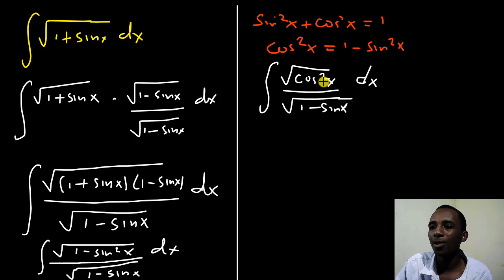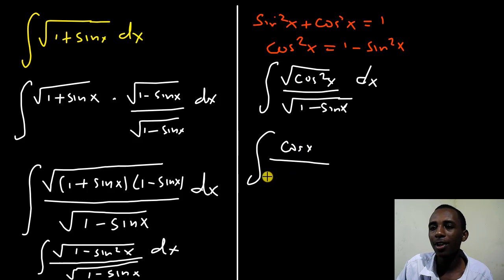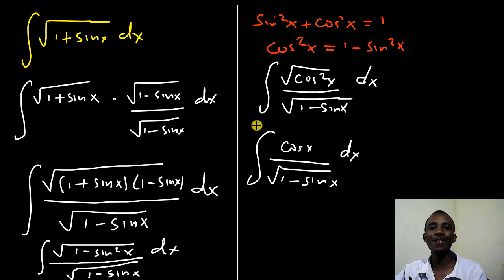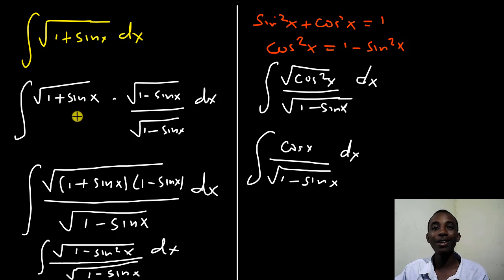This simplifies to cosine x divided by the square root of 1 minus sine x dx. This is beautiful because we have 1 minus sine x and the derivative of 1 minus sine x involves cosine x — so we have a function and its derivative, meaning we can use u-substitution.